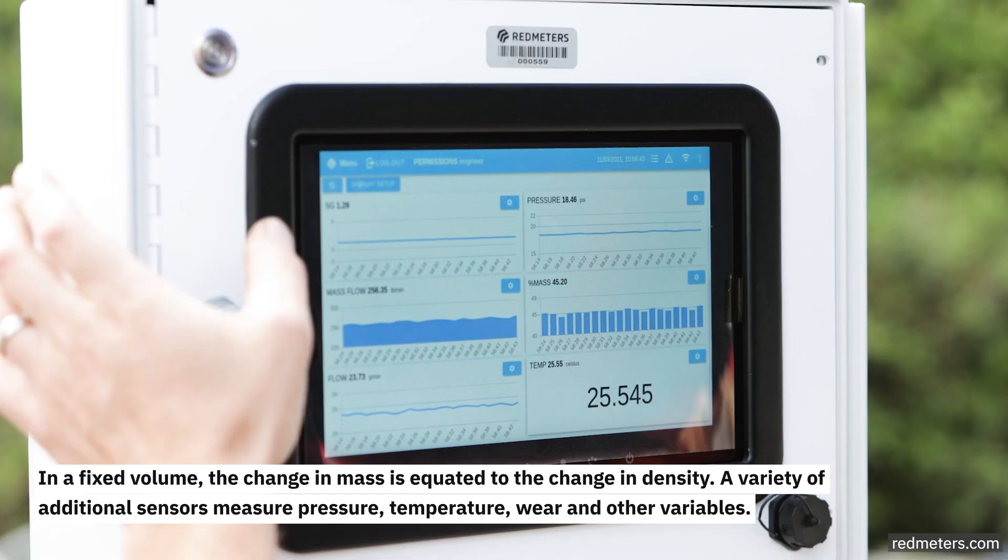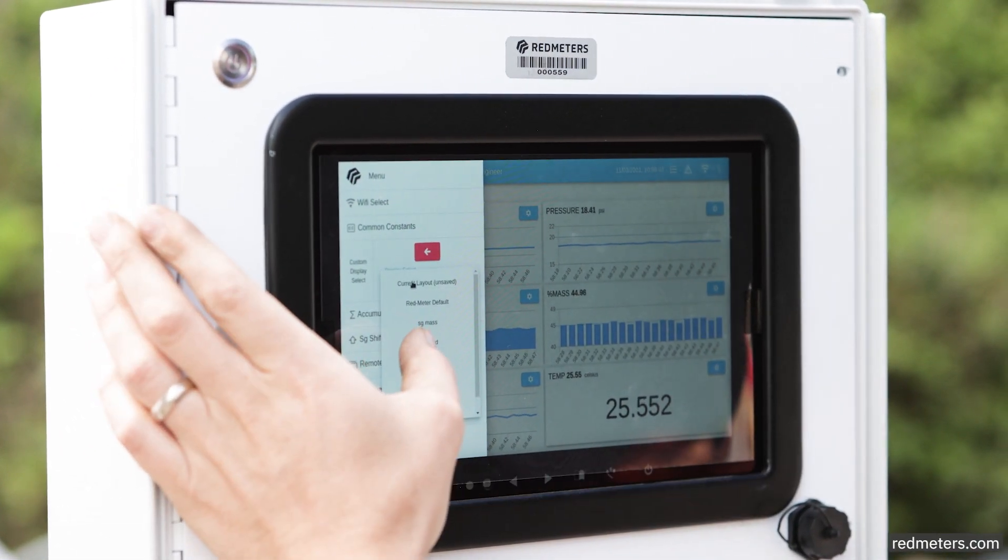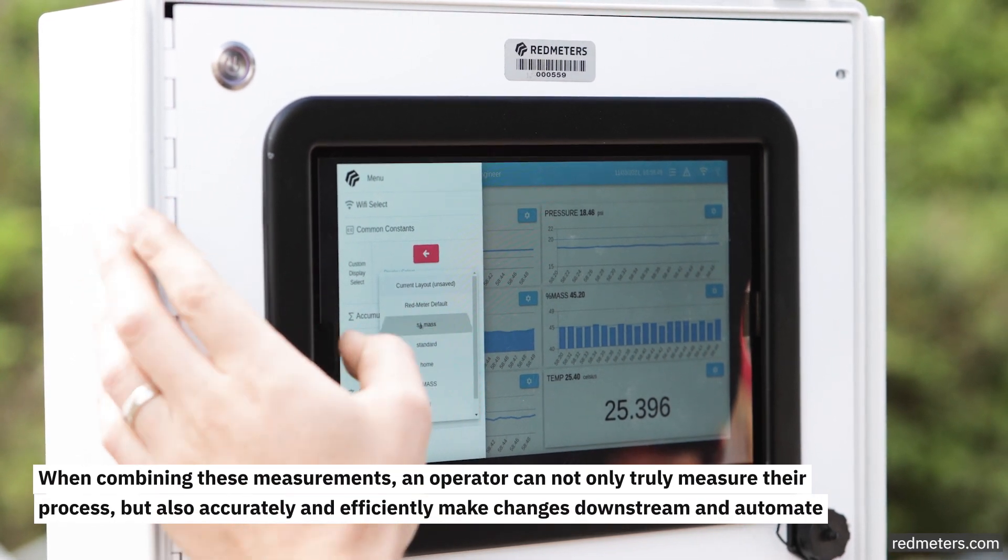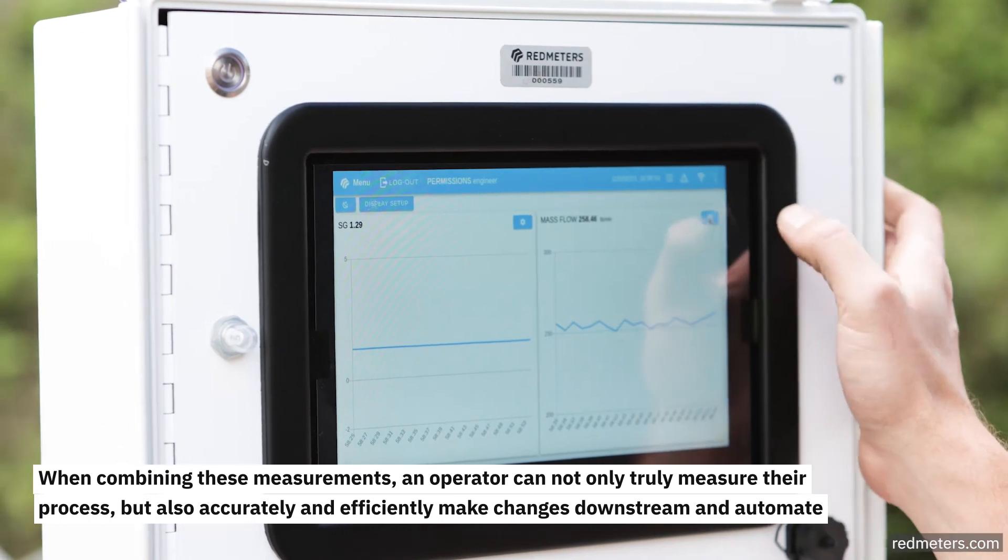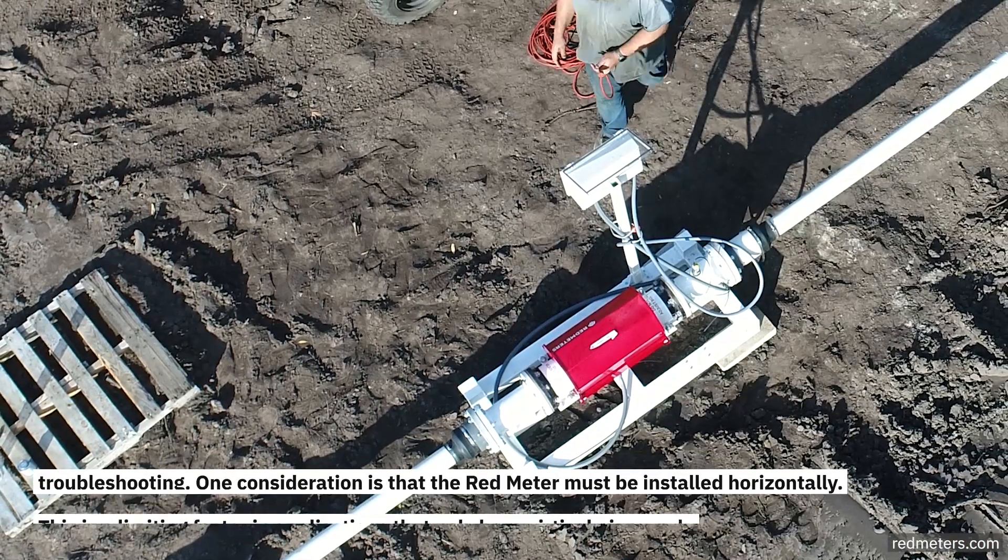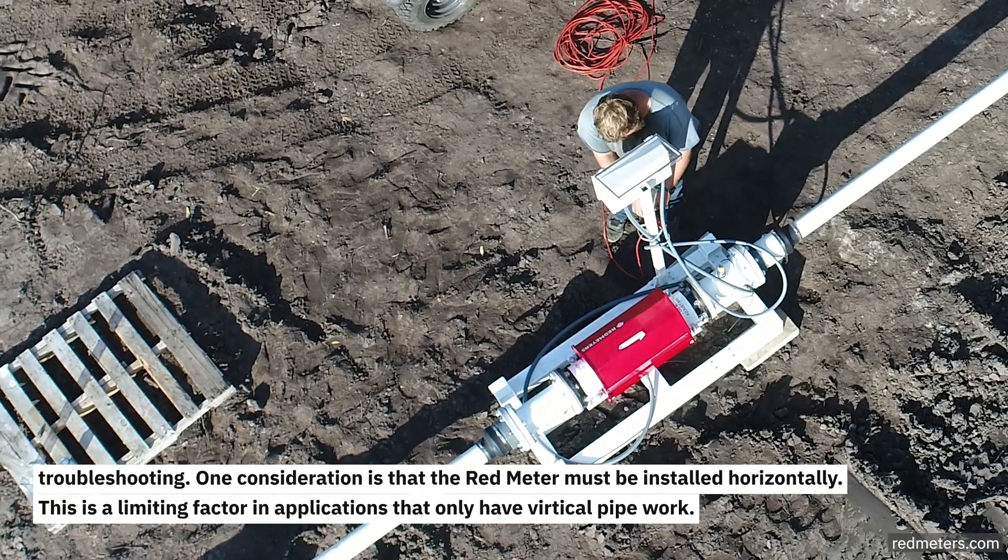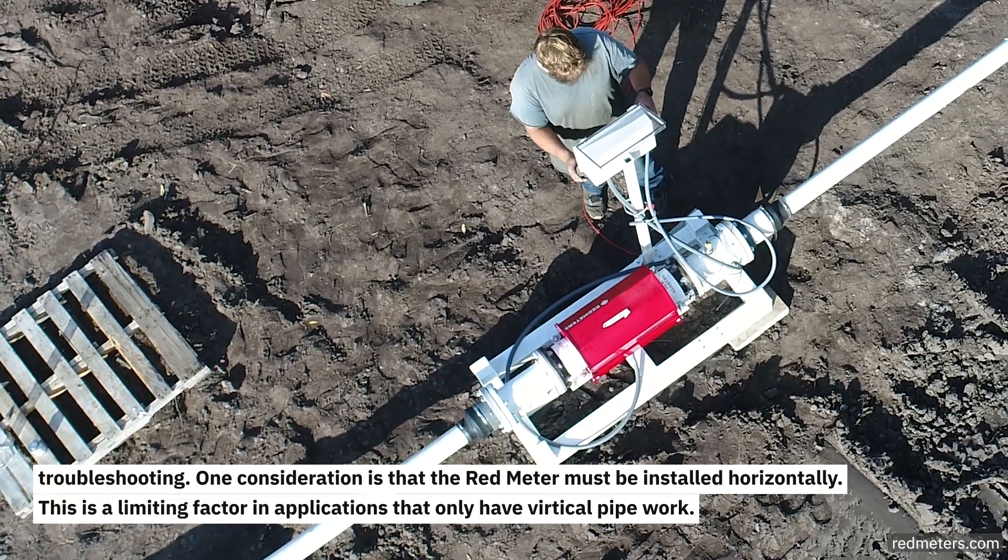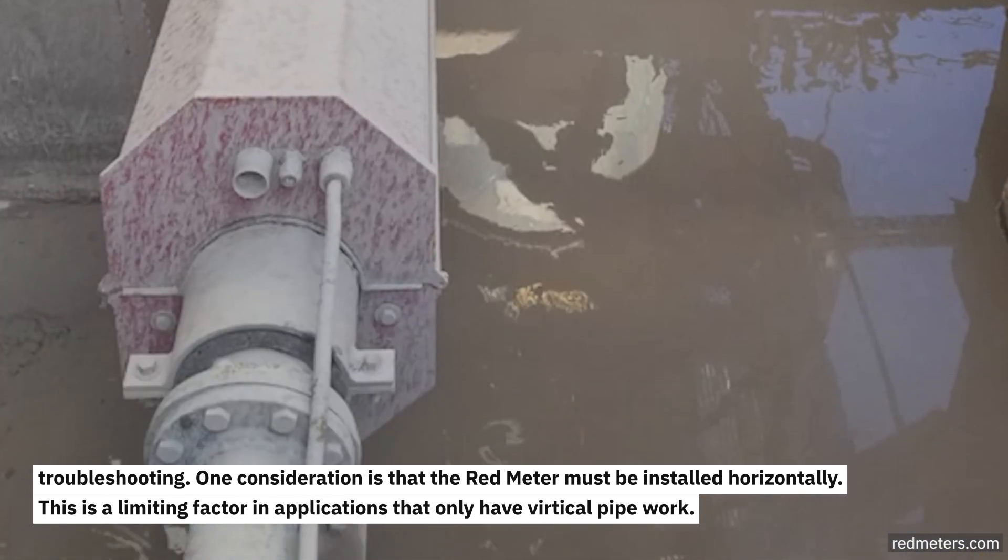A variety of additional sensors measure pressure, temperature, wear, and other variables. When combining these measurements, an operator can not only truly measure their process but also accurately and efficiently make changes downstream and automate troubleshooting. One consideration is that the Red Meter must be installed horizontally. This is a limiting factor in applications that only have vertical pipework.